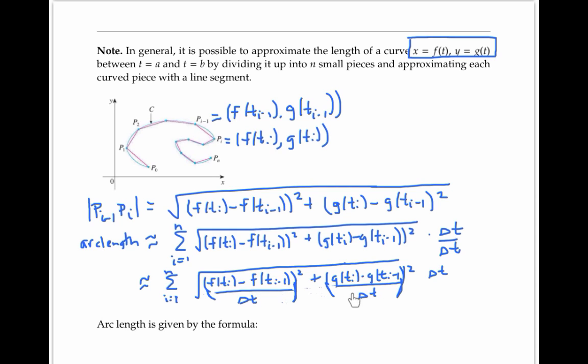Because these quotients here are approximately equal to f prime and g prime, or more rigorously, because of the mean value theorem, I can replace my expression with f prime of ti star squared and g prime of ti star squared, where ti star is some time in the ith time interval.